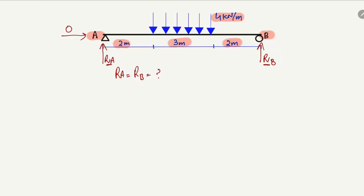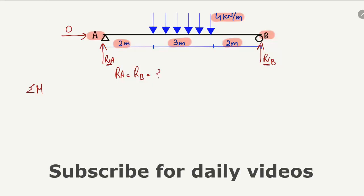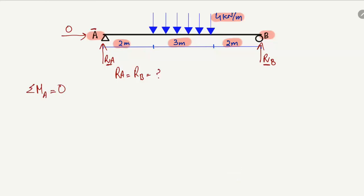There are different ways to find the reactions. We will use the equilibrium equation because this is a determinate beam. We will use the equilibrium equation: summation of moments at any point equal to zero. Let's take point A, so summation of moments at point A equals zero. We assume clockwise moment is positive and anti-clockwise moment is negative.